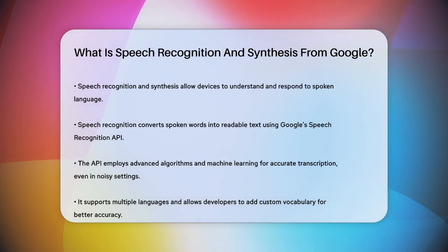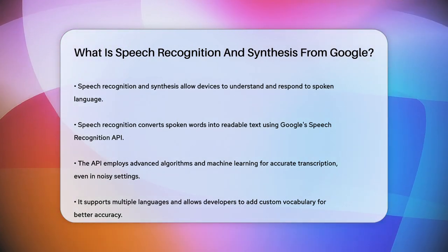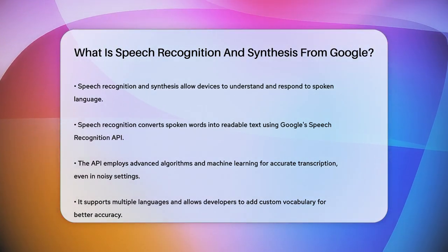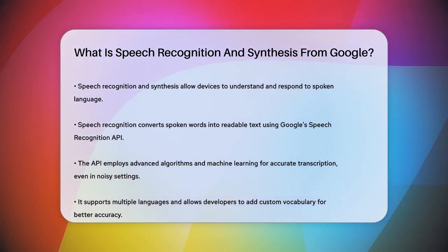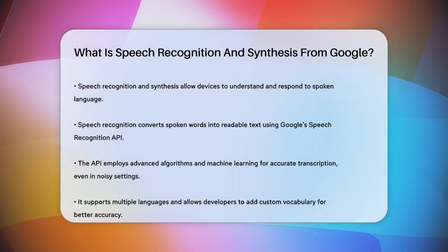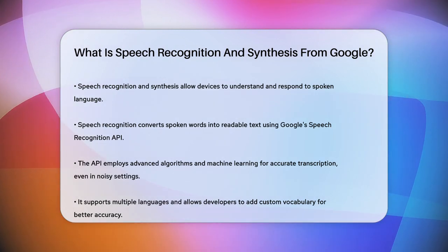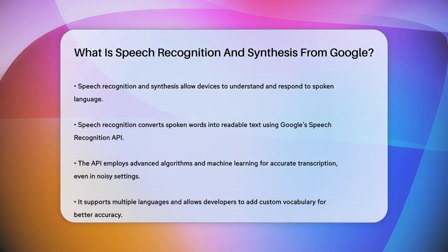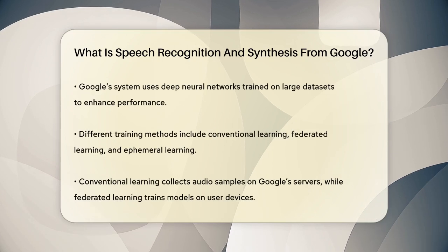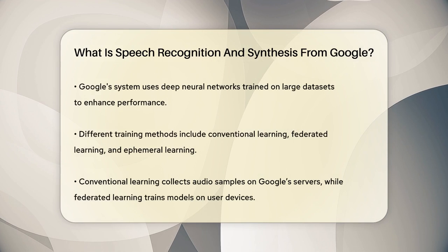Let's start with speech recognition. This is the process where a machine or program can identify words spoken aloud and convert them into readable text. When you speak into a microphone, the audio is sent to Google's Speech Recognition API. This API uses advanced algorithms and machine learning models to transcribe your spoken words into text, even if you're in a noisy environment. It supports multiple languages, making it useful for a global audience, and developers can even add custom vocabulary to improve recognition accuracy.